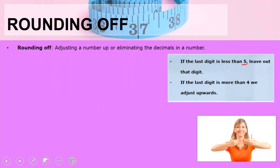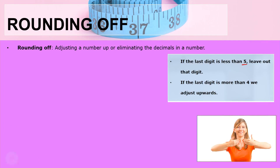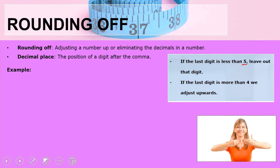The first section we will be dealing with is rounding off. When we talk about rounding off, we are talking about adjusting the value upwards or eliminating the units, depending on the conditions. The principle is: if the last digit is less than five, then we leave out that digit or decimal. And if the last digit or decimal is more than four, then we adjust upwards. Remember, the decimal place is the position of a digit after a comma.